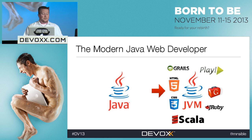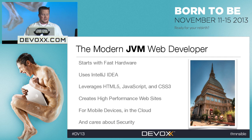The first thing you need to do to be a modern Java web developer is use the JVM. Once you use the JVM, you get access to all these tools like Grails, Play, HTML5, JRuby, and Scala. And then there are a number of things you need to do on top of that.